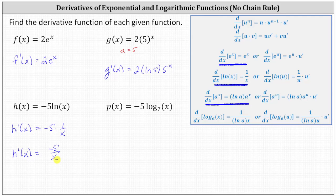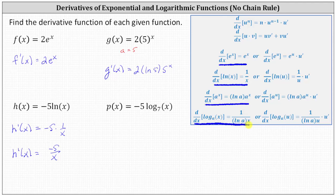Finally we have p(x) equals negative five times log base seven of x. Notice we don't have log base e, we have log base seven. Therefore we use the derivative formula: the derivative of log base a of x with respect to x is equal to one divided by the product of natural log a and x.